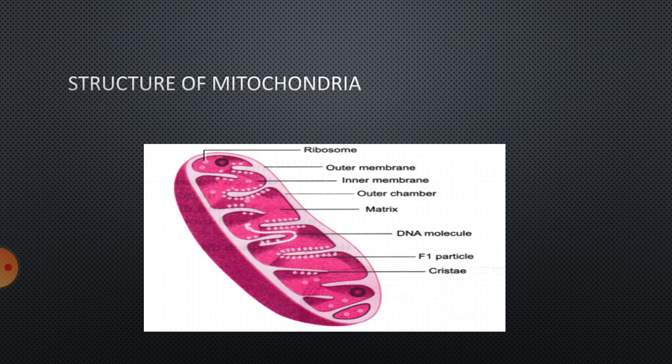Mitochondria are also known as cell furnace, or energy liberators, or powerhouse of the cells. Because in higher organisms, these mitochondria conduct respiration so that they release ATP molecules essential for the growth and development of the cell and to carry out all type of metabolic activities. Mitochondria are higher cell organelles as they are enclosed by two membranes: outer membrane and inner membrane. The space between the two membranes is called perichondrial space. In the inner membrane, you can see small infoldings inside the mitochondria. They are called cristae foldings.